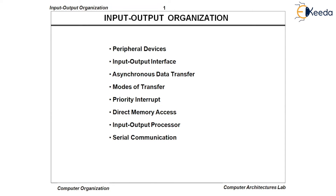In the main memory, there are two essential parts: one is the instruction part and one more is the data part. In the instruction part, the instructions of the programs will get stored. In the data part, the operands of each and every instruction will get stored. So collectively, these will be accessed by the CPU, and finally the CPU will be able to execute instruction by instruction, thereby the programs will get executed. This mechanism we have already gone through.